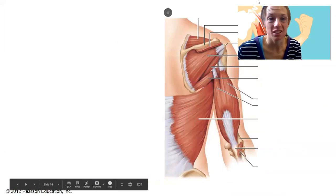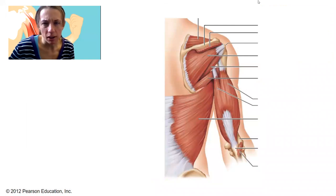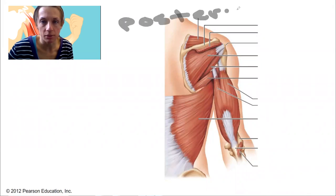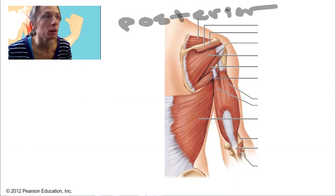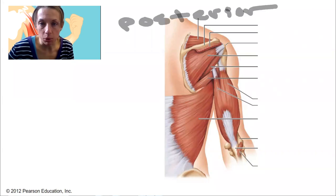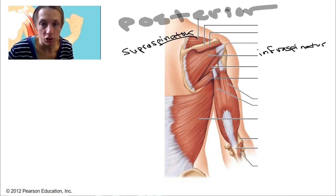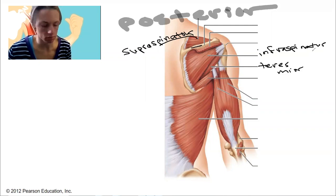What view are we looking at here? That's the first thing you need to figure out. Here is my spine, my scapular spine — so I'm looking at a posterior view. In this posterior view, we're going to have the supraspinatus and the infraspinatus, above and below the scapular spine, and also the teres minor — that last rotator cuff muscle.